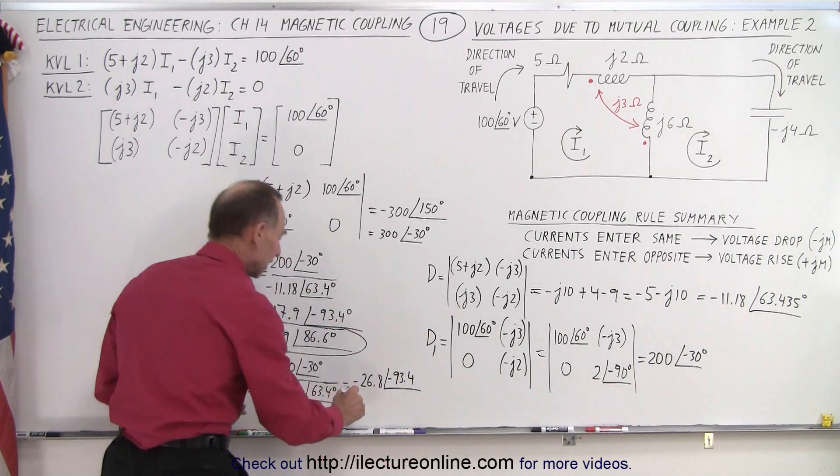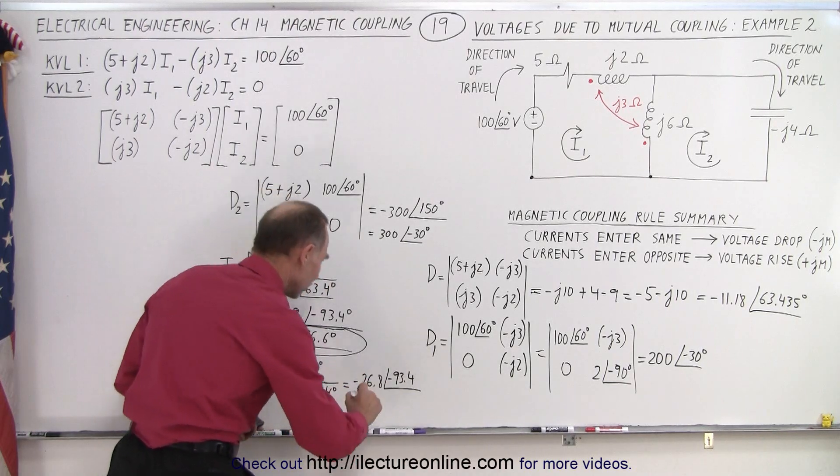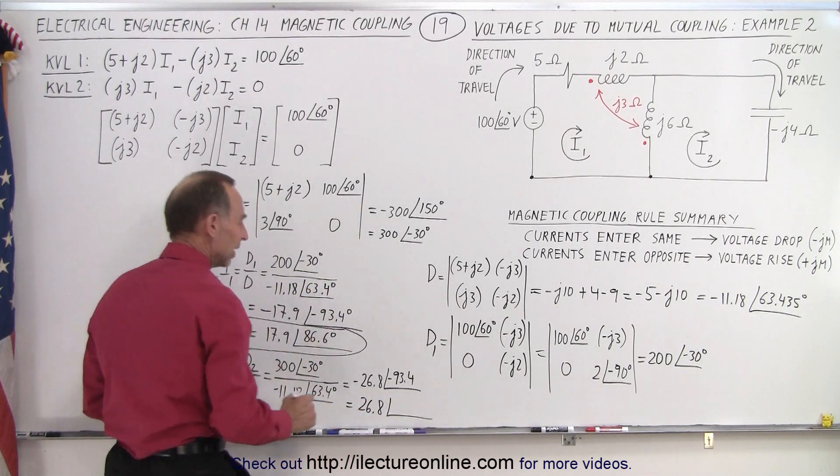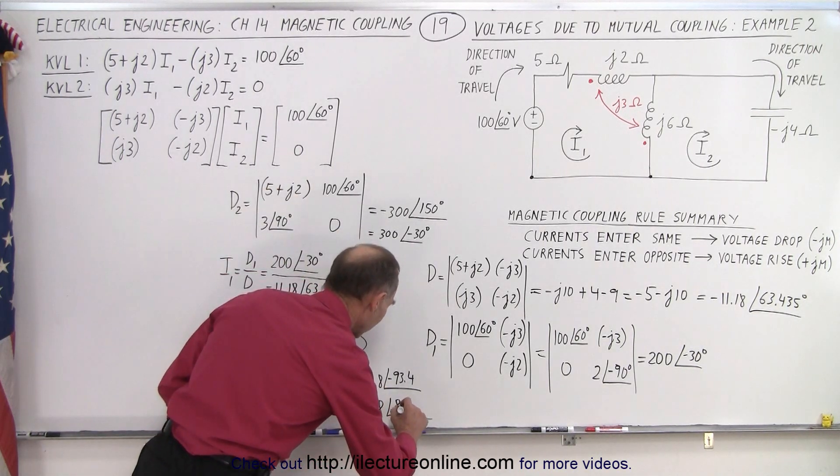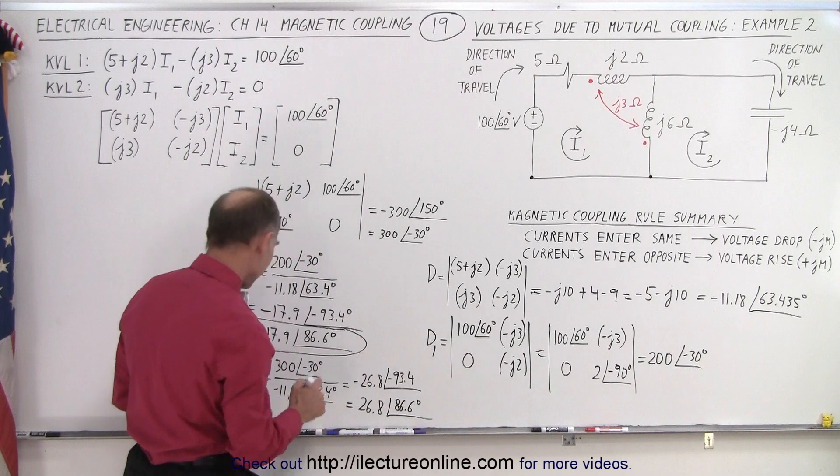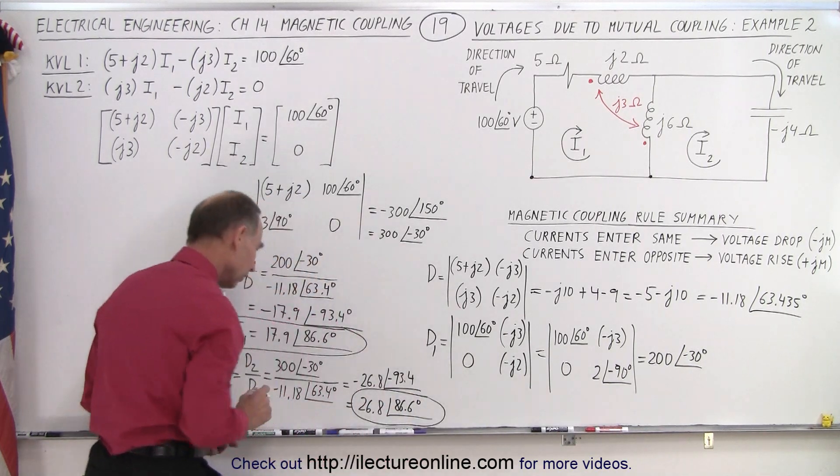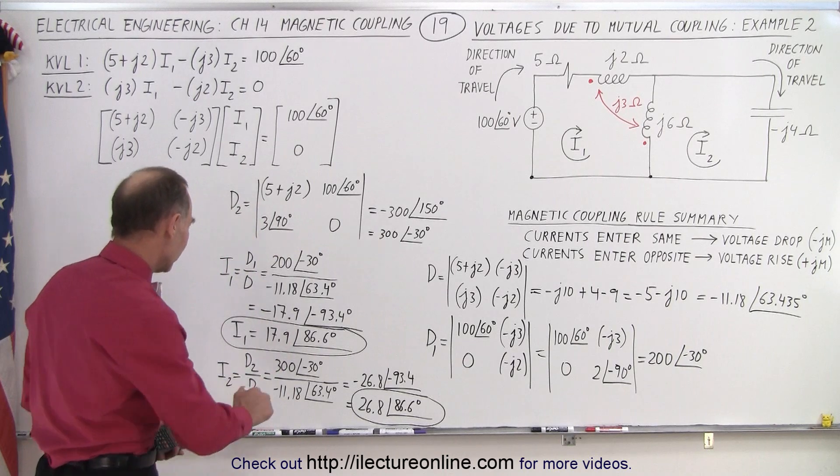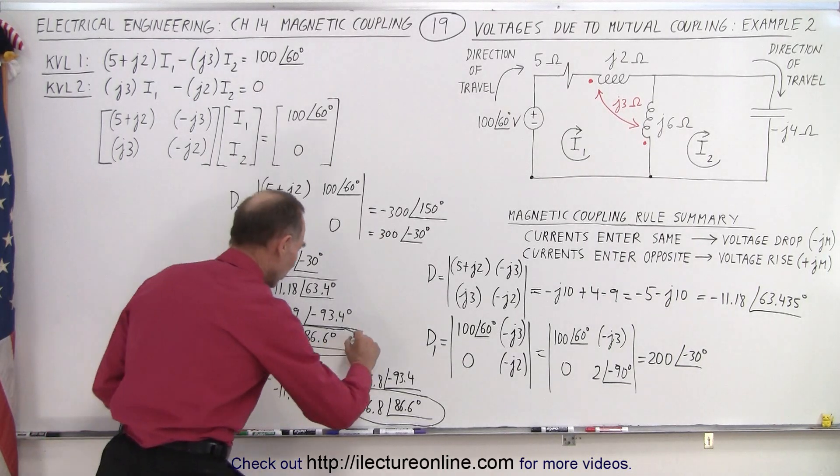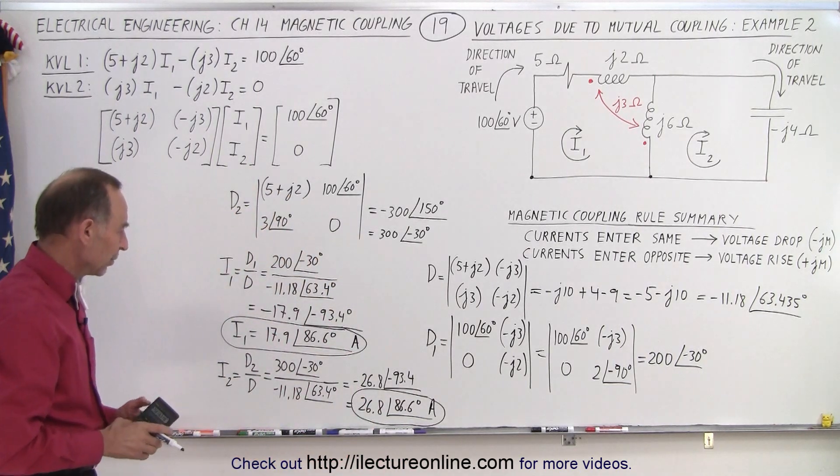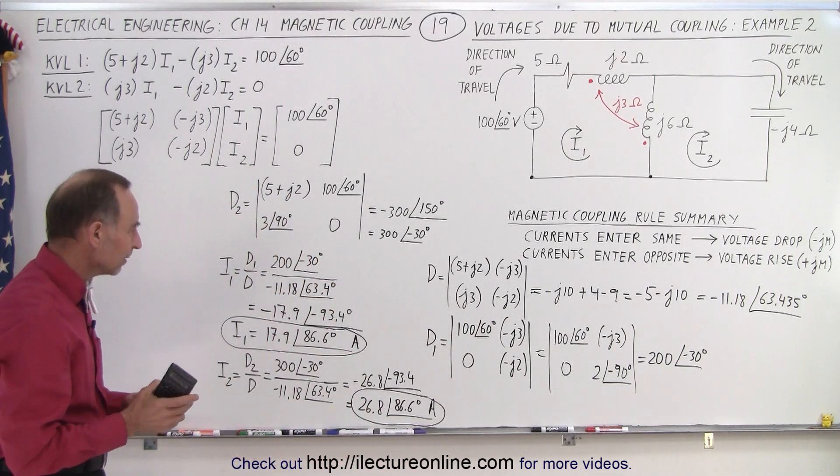But again, to get rid of the negative, I add 180 degrees. I get 26.8 with a phase angle of 86.6 degrees. Is that the same phase angle? It certainly is. Same phase angle for both currents, I1 and I2. So this one is 17.9, of course if you want units in there, that will be amps. Just a different amplitude, but same phase angle.